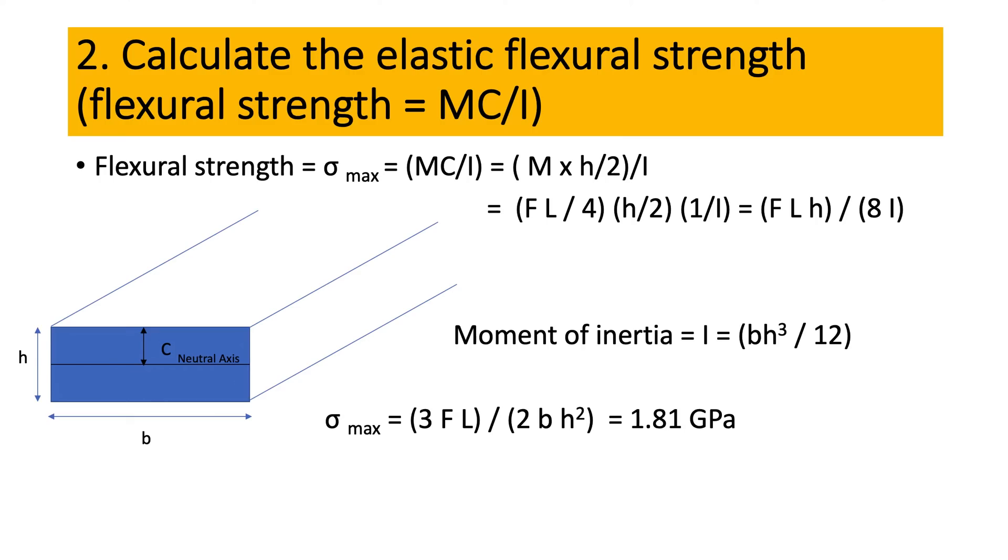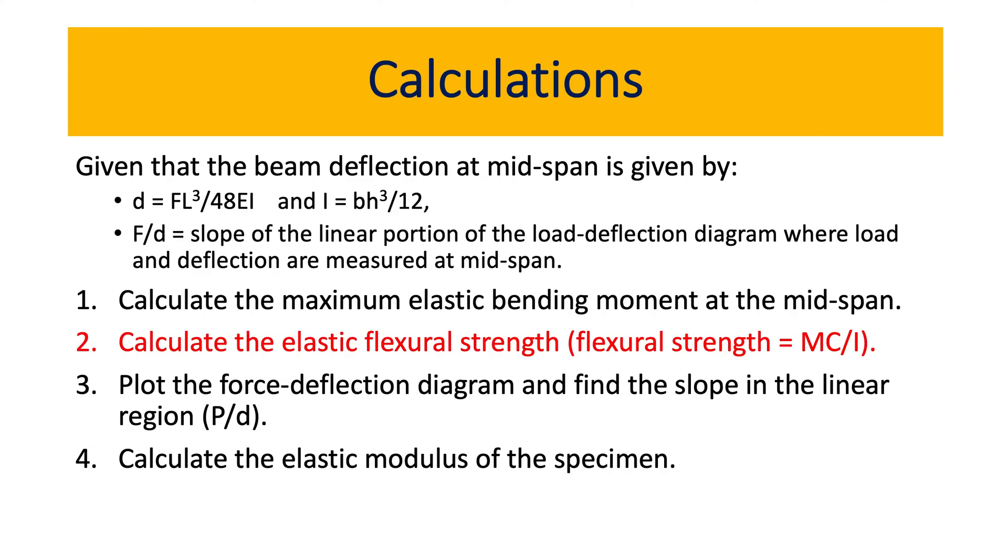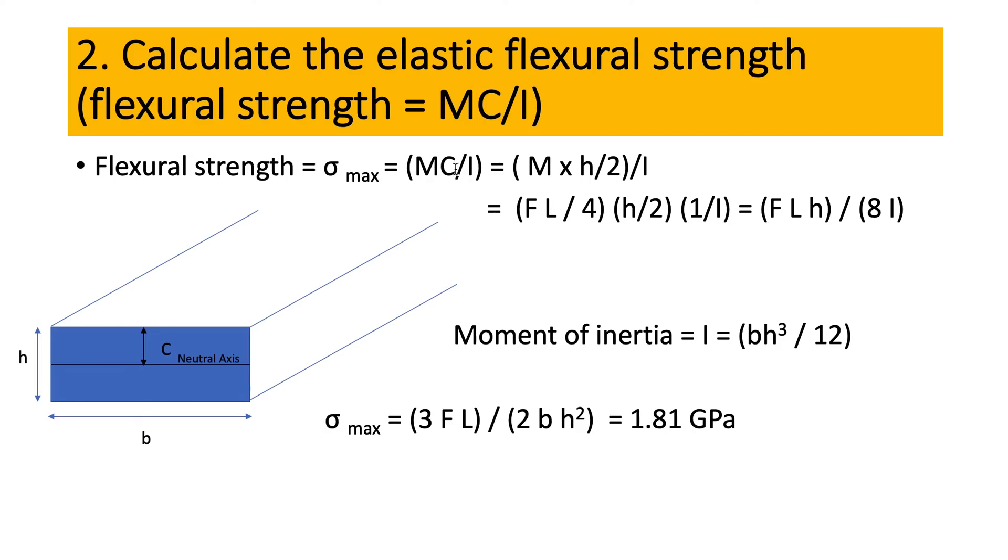Here's how we're going to do it. We have this formula for sigma max, which is the strength—the stress in three-point bending—so it is MC/I, where M is the moment which we calculated from the previous video, which is the maximum elastic bending moment.